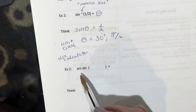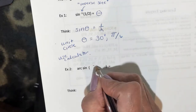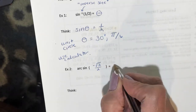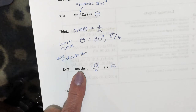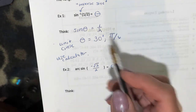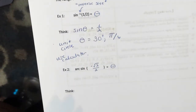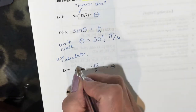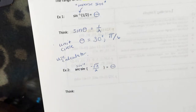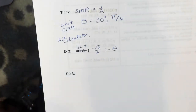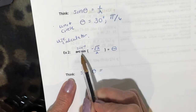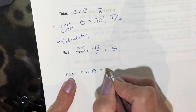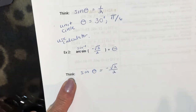Let's look at the second problem — this is a little different. Arc sine of negative square root of 2 over 2 equals theta. Arc sine, ladies and gentlemen, is just another way of writing inverse sine. So just cross that off and write inverse sine. What does this mean? You need to think: the sine of what angle equals negative root 2 over 2. Remember, we're either in quadrant 1 or quadrant 4.